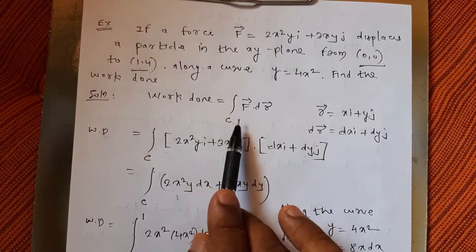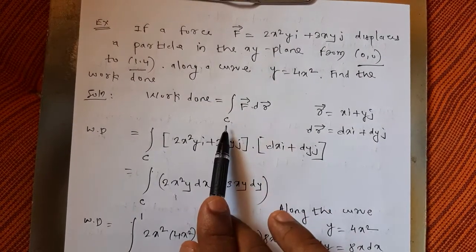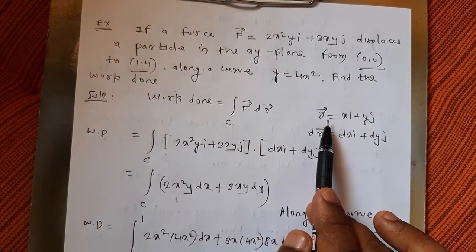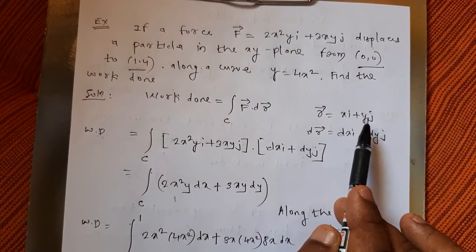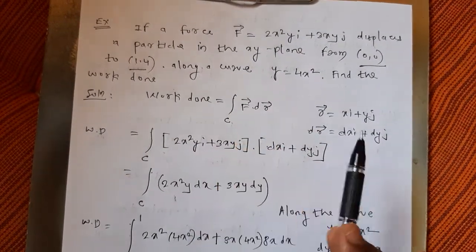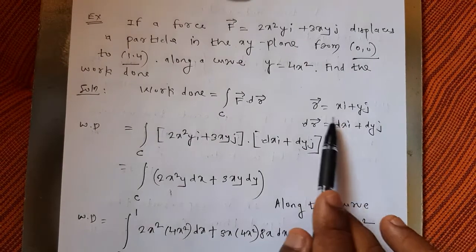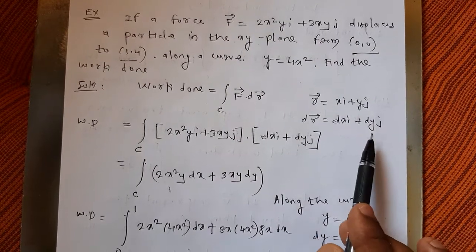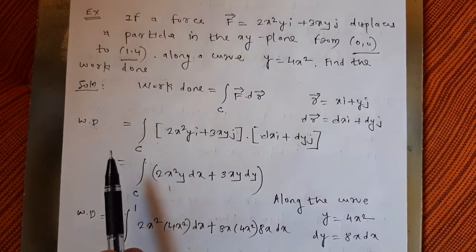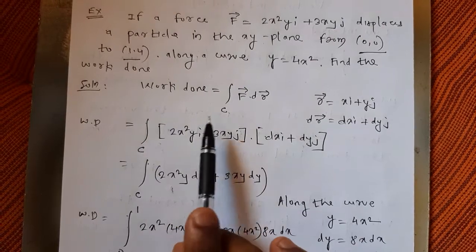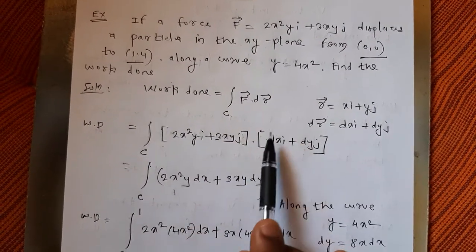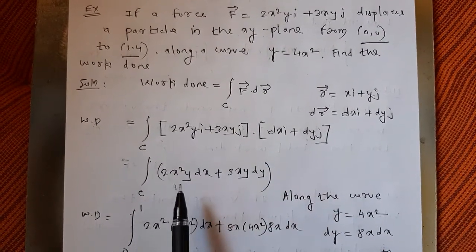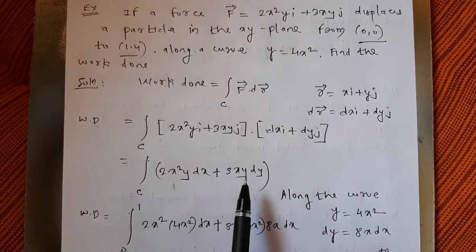First I will write the formula for work done: integration of vector F dot dr along the curve C. Here r is the position vector xi + yj in the xy-plane, so dr = dx·i + dy·j. Therefore work done equals the dot product, which gives 2x²y dx + 3xy dy.